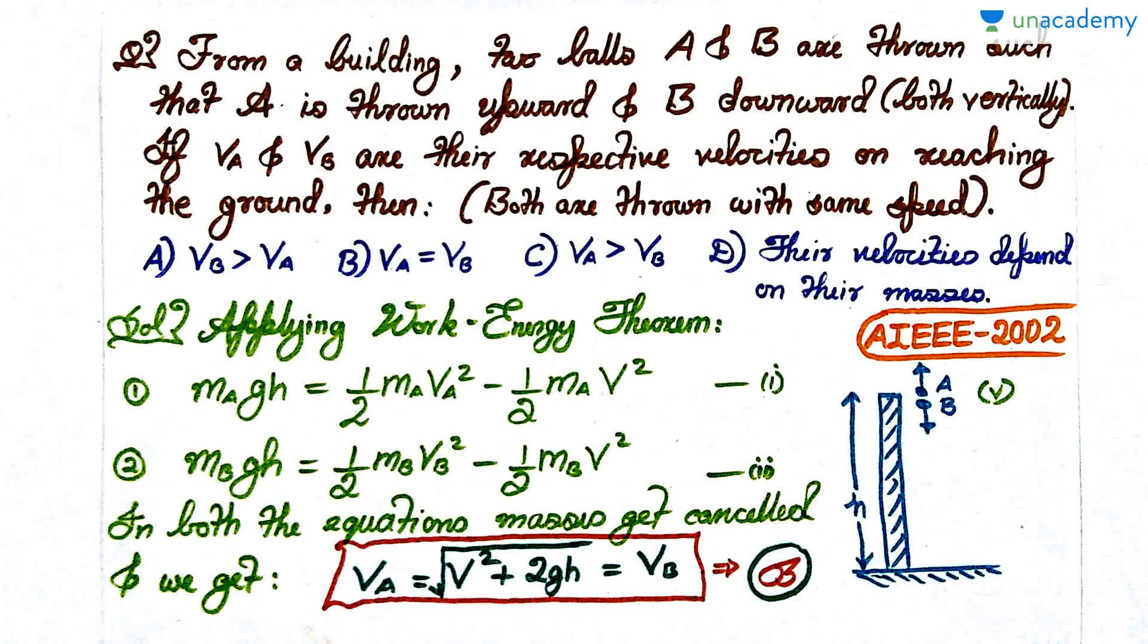Let's see this AIEEE question which was asked all the way back in 2002, basically the year approximately when the AIEEE exam started. The question is: from a building two balls A and B are thrown such that A is thrown upward and B is thrown downwards, both vertically.